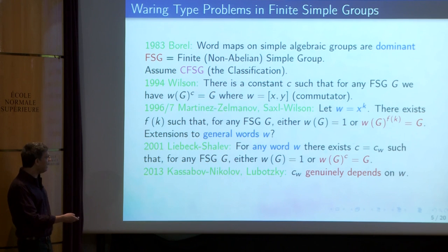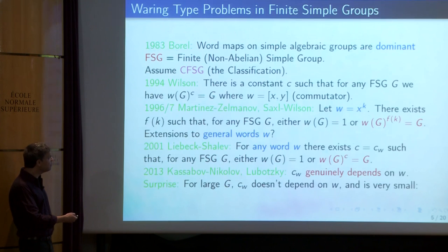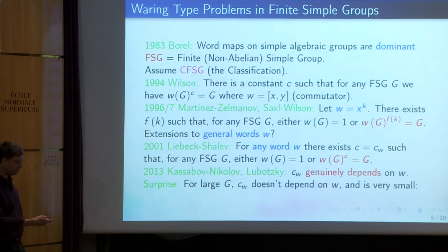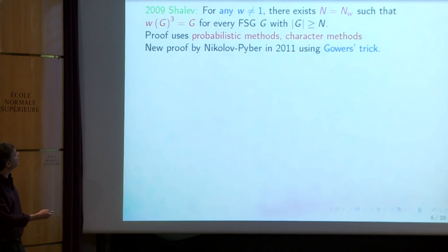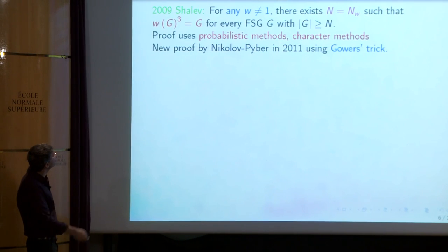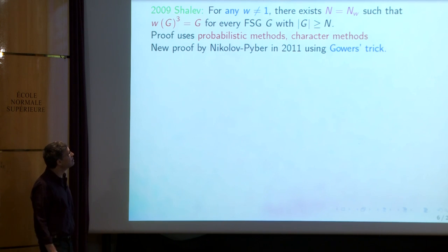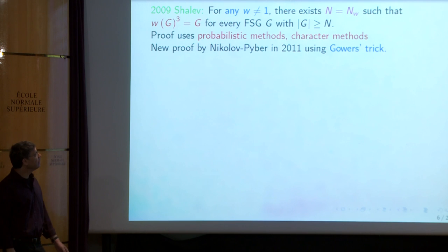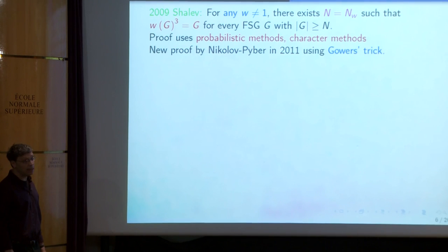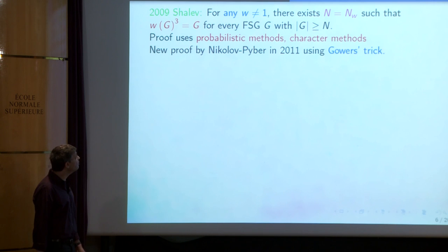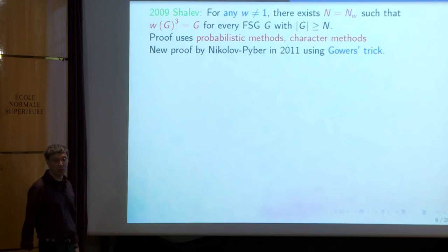Kasabov and Nikolov gave some examples and Alex Lubotsky gave a nice characterization of what can be the image of a word map. All these results show that C_w genuinely depends on w, so it may go to infinity — it is not absolutely bounded. But, surprise: it was a little surprise that for large G, C_w does not depend on w and is actually very small. The first result of this type is from 2009: for any non-trivial word w, there exists a constant depending on w such that wG^3 = G for any finite simple group whose order is at least n(w).